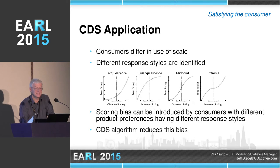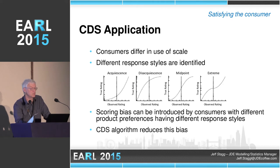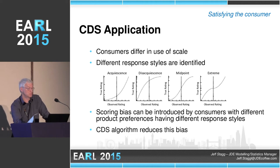The CDS application — Constrained Dual Scaling — doesn't mean a lot, but essentially what it's trying to do is identify consumer bias in the use of their scale. Consumers use scales differently. We can identify different response styles: acquiescent, disacquiescent, midpoint, and extreme. And they follow the sorts of distribution scores that you can see on those graphs.